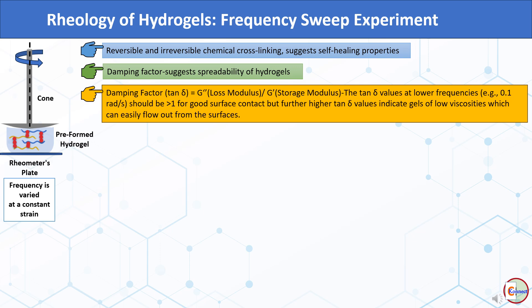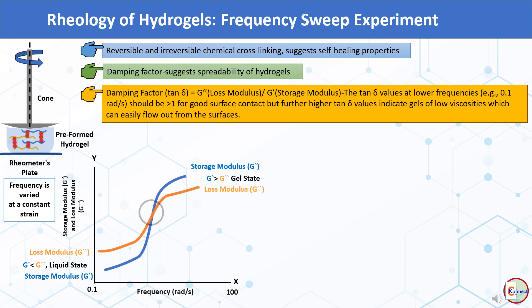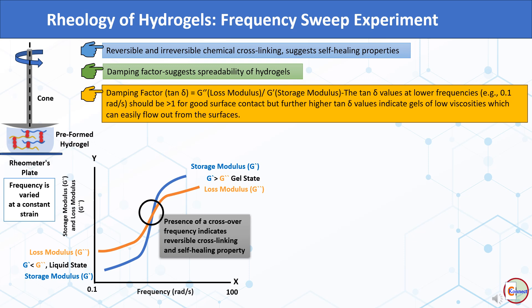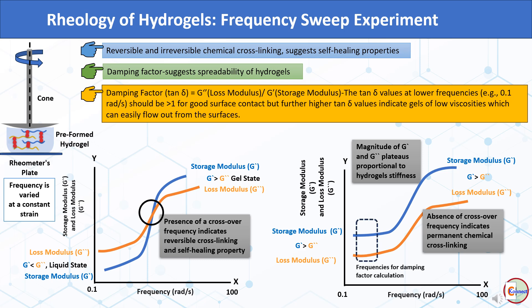In the frequency sweep rheogram, initially loss modulus is higher than storage modulus, indicating a solution state. In the middle of the rheogram, a crossover point appears where storage modulus becomes higher and the gel starts gaining solid-like properties. The presence of a crossover frequency indicates reversible cross-linking and self-healing property. In contrast, absence of a crossover frequency indicates permanent chemical cross-linking. Additionally, the magnitude of plateaus of storage and loss moduli in frequency sweep rheograms is proportional to hydrogel stiffness, while lower frequencies are used to calculate the damping factor.